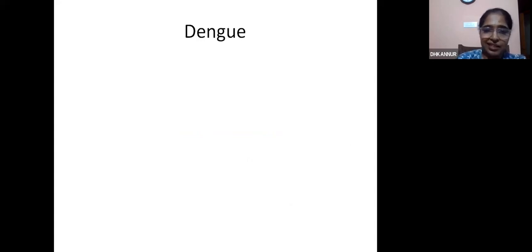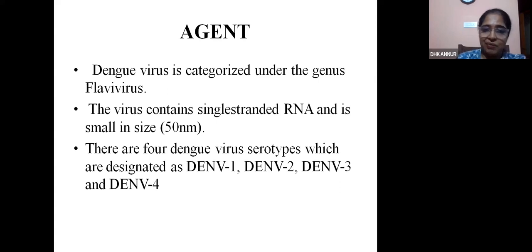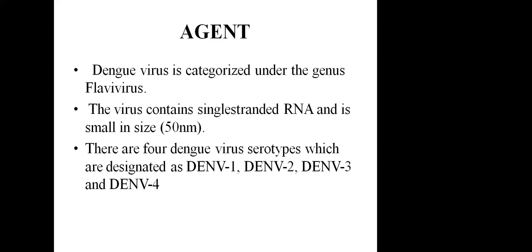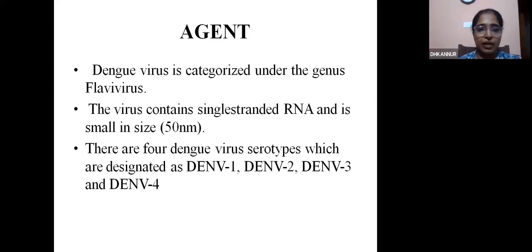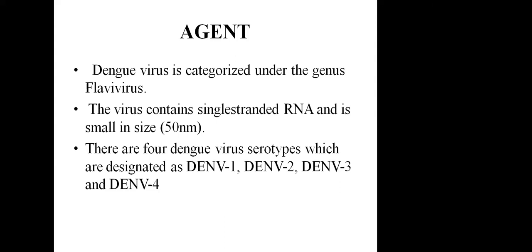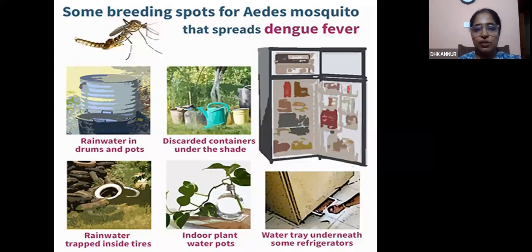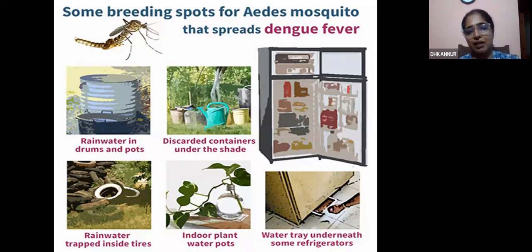Next is dengue. It is a viral infection caused by a virus under the genus Flaviviridae — an arthropod-borne infection. The vector is the Aedes mosquito. The virus is a single-stranded RNA virus with four dengue virus serotypes: 1, 2, 3, and 4. The number of cases is gradually increasing. From the past one to two weeks, the number of mosquito nets in our ward is increasing because of more dengue cases.